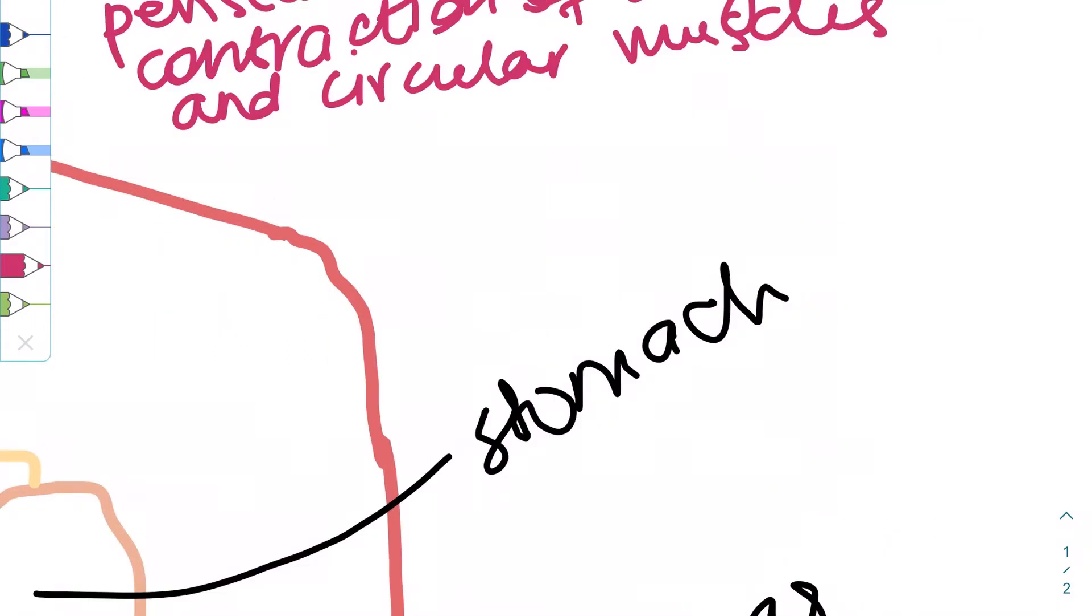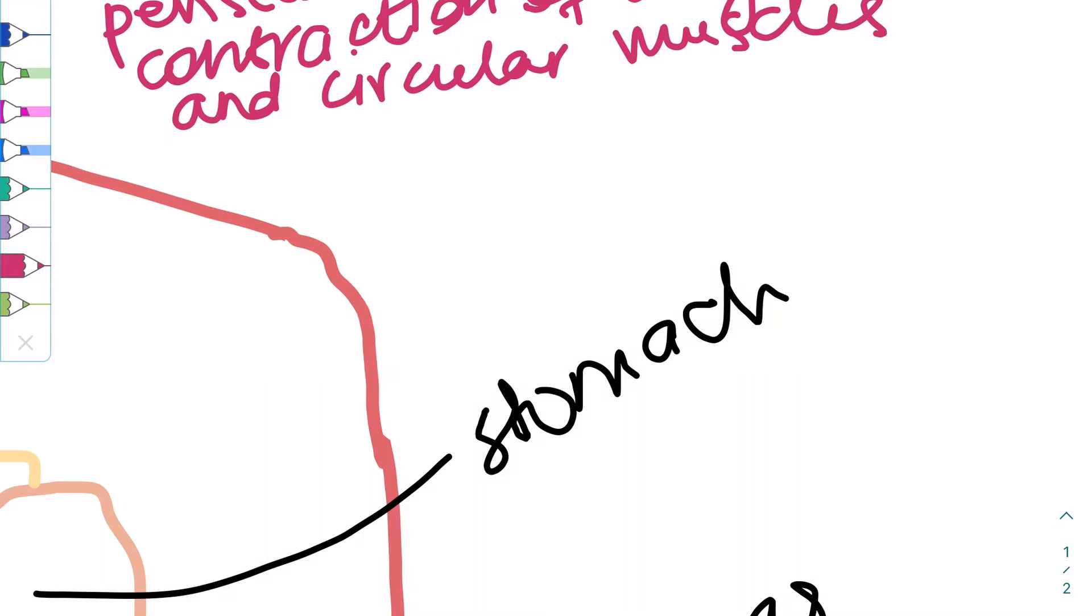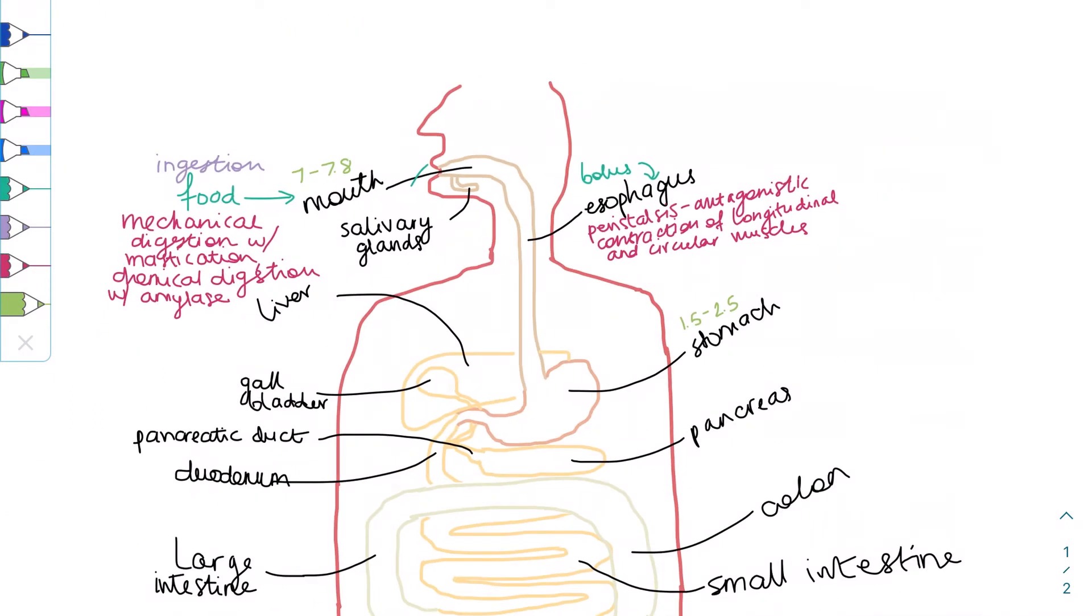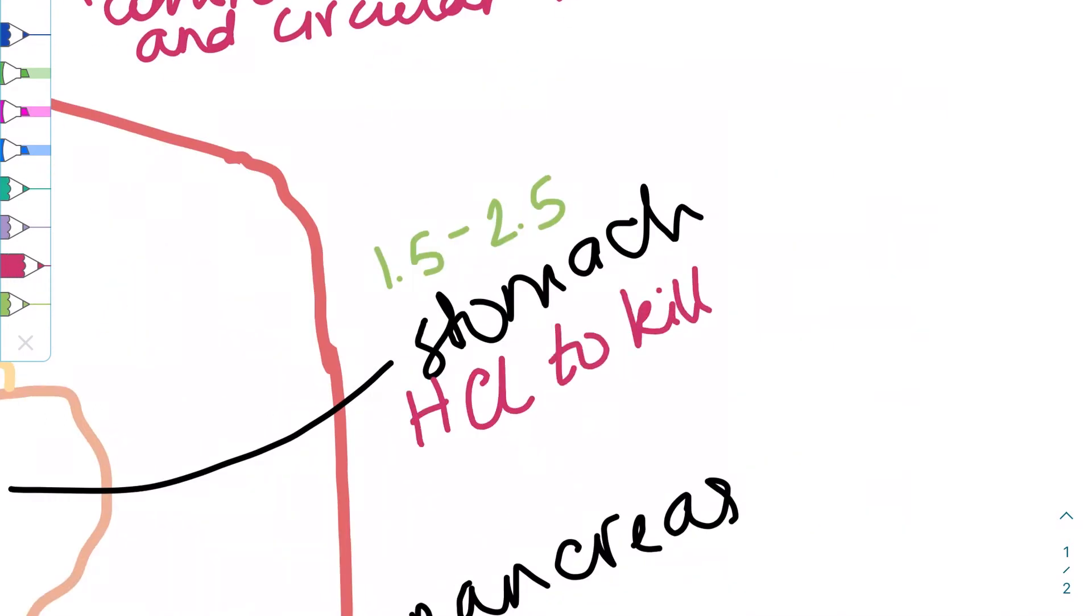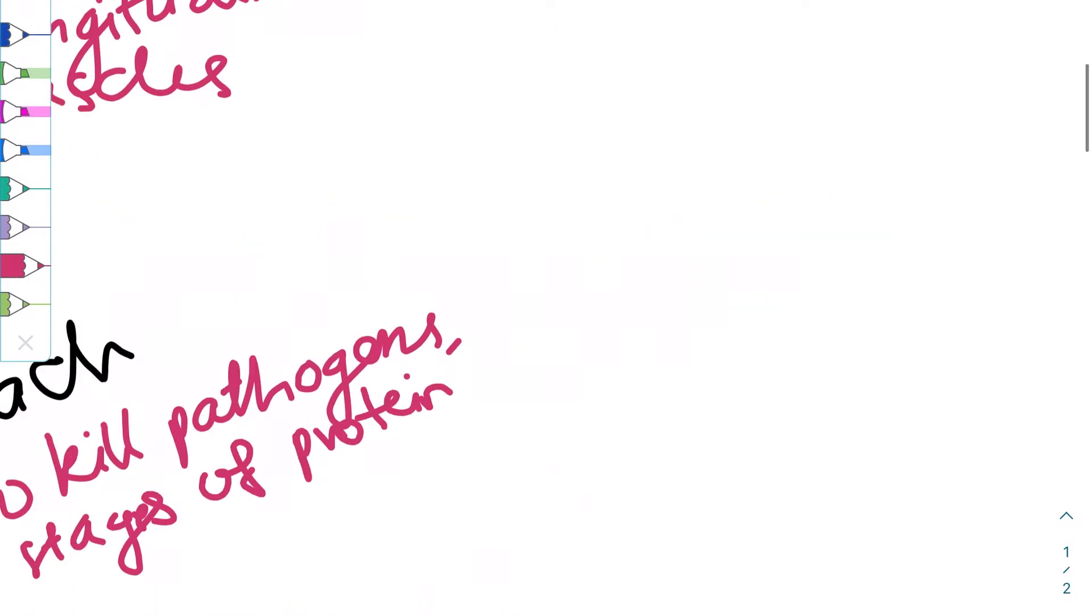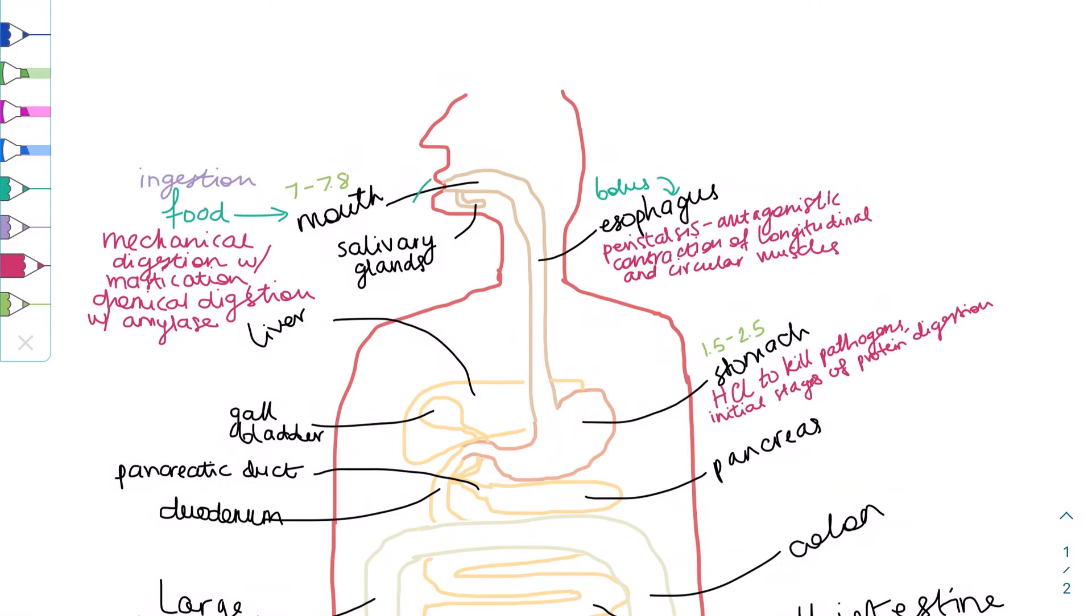Once the bolus reaches the stomach, hydrochloric acid is secreted by the cells lining the stomach, so the pH is very acidic, ranging from 1.5 to 2.5. These extreme conditions kill any pathogens and also denature a lot of the proteins found in the food. Pepsin, which has an optimal pH in this range, is also secreted by the cells, which begins the digestion of protein. The bolus is further mechanically digested while it is churned in the gastric juice.